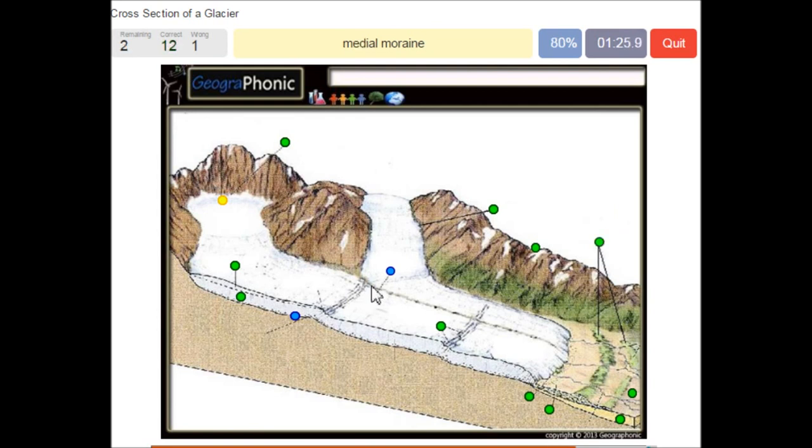A medial moraine in the middle. A zone of abrasion. That's what we see here. Here we have abrasion.